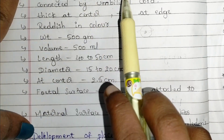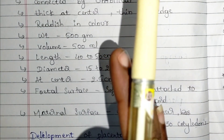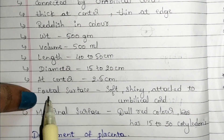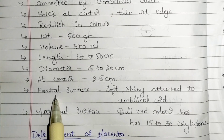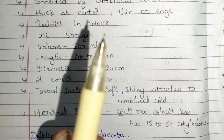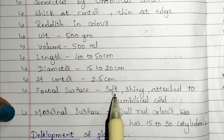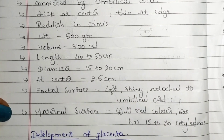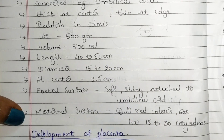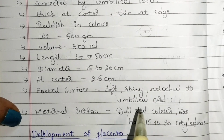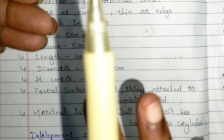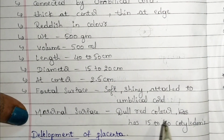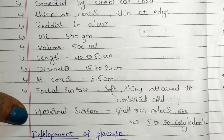The placenta is both an organ — partially fetal and partially maternal. From the fetal side, the placenta is very soft, shiny, and attached to the umbilical cord. From the maternal side, it is dull red in color, not soft and shiny as on the fetal side, and it has 15 to 30 cotyledons.